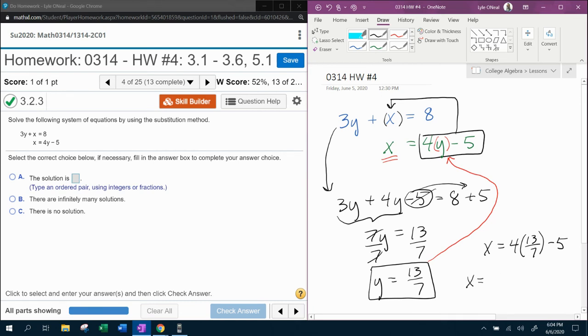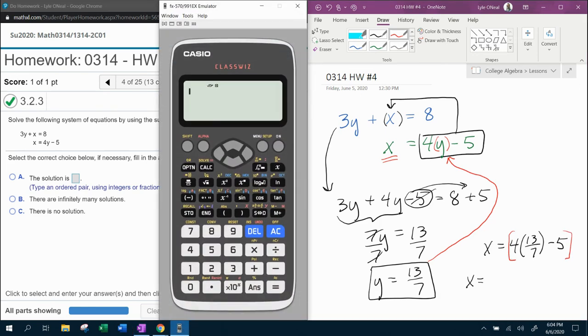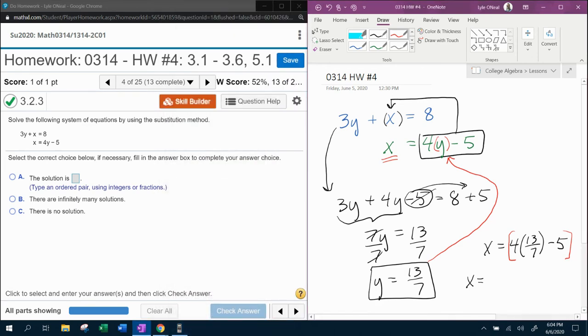And what better way to do this calculation than with the calculator? Let's figure that out. 4 times, as a fraction, 13 sevenths minus 5, is 17 sevenths. Whoops. Got to be color consistent here. 17 sevenths.